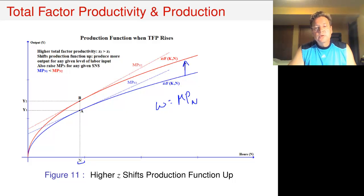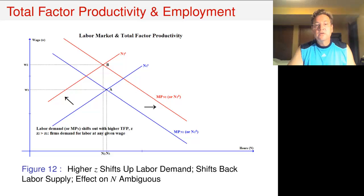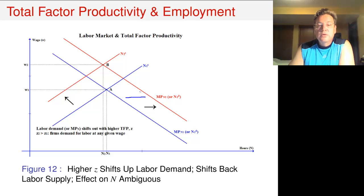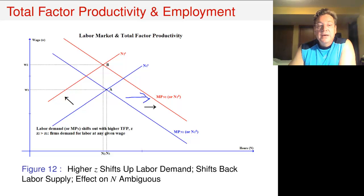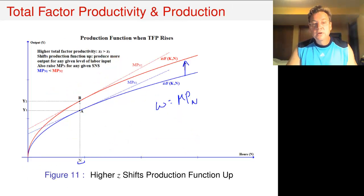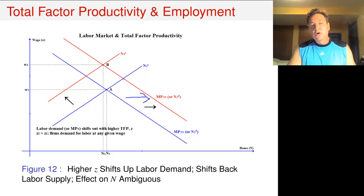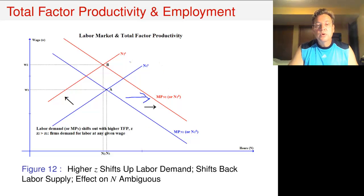So the question becomes: what is going to drive the wage up? We go to the labor market where we've got two different effects. The first effect is that higher productivity is going to increase the marginal product and therefore shift the demand for labor out. If there were no change in the supply of labor, we would unambiguously get a higher wage and also higher employment. Now, if the income effect is quite strong, then the supply of labor will shift back a lot, and the final outcome will be that that reinforces the increase in the wage.